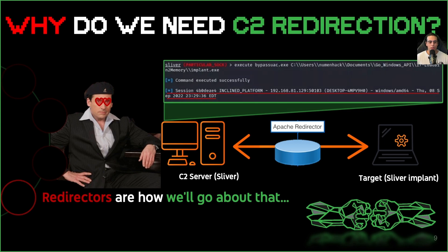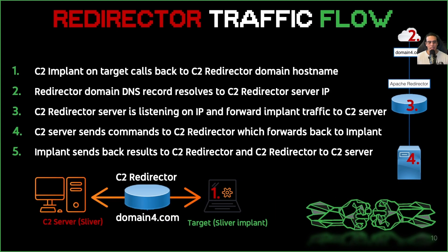This intermediary server is what we call the redirector, and it will be responsible for relaying C2 traffic to our C2 server. The connectivity scheme goes as follows. First, our C2 implant requests a connection to our C2 redirector hostname on domain4.com. Second, the redirector's domain DNS record resolves to the IP address of our C2 redirector server. Third, the C2 redirector server is listening for incoming connections on the public IP address that the DNS record resolves to, and forwards the connection request to our backend C2 server. Fourth, the C2 redirector forwards inbound C2 traffic from the C2 implant to our C2 server. Additionally, the same process occurs in the opposite direction and the results of the commands are sent from the C2 implant in the target to the C2 server where we can see them.